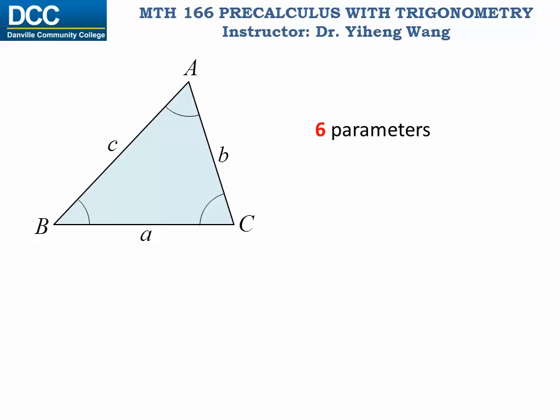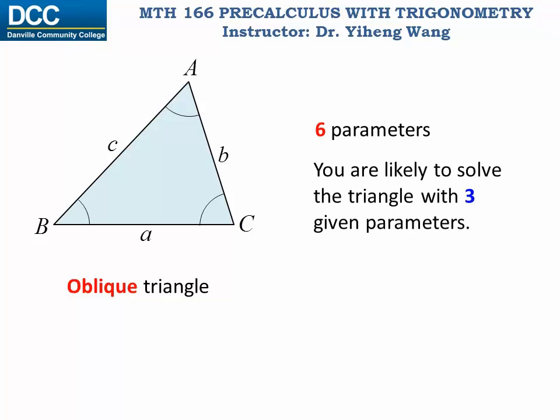We have learned how to solve for right triangles. Now we're going to learn how to solve for oblique triangles — in other words, triangles that do not have a 90 degree angle. By solving a triangle, we mean that we want to specify all six parameters associated with it. Normally we can do it if we are given three out of the six parameters, and then we can solve for the remaining three.